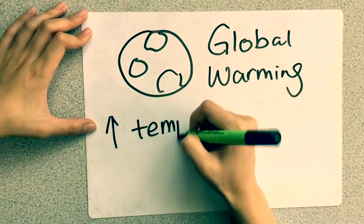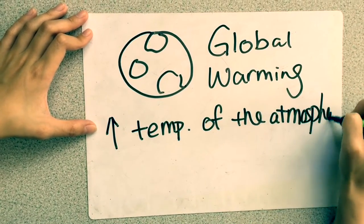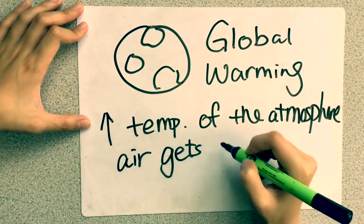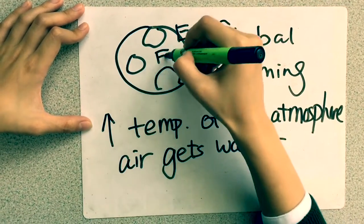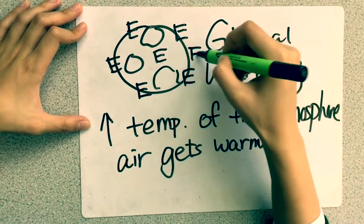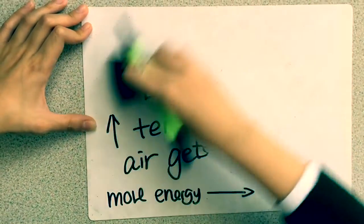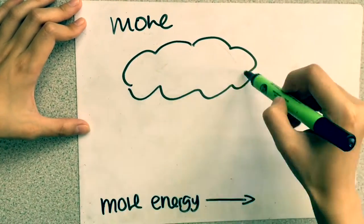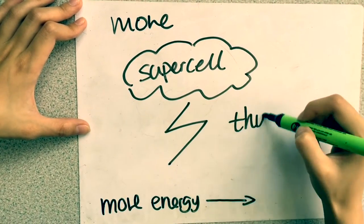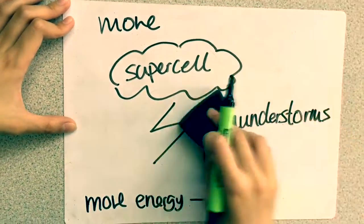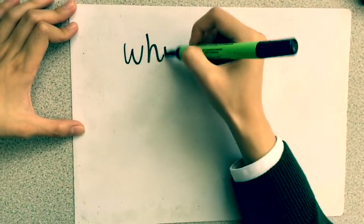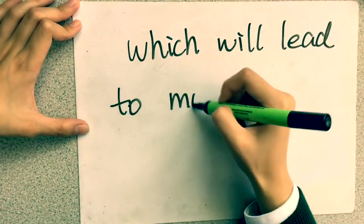Global warming increases the temperature of the atmosphere which causes the air to get warmer, so there is more energy in the atmosphere. This means there will be more supercell thunderstorms, which will lead to more tornadoes.